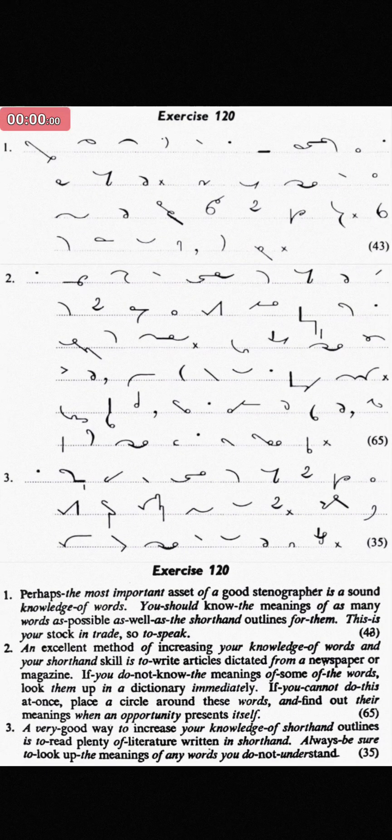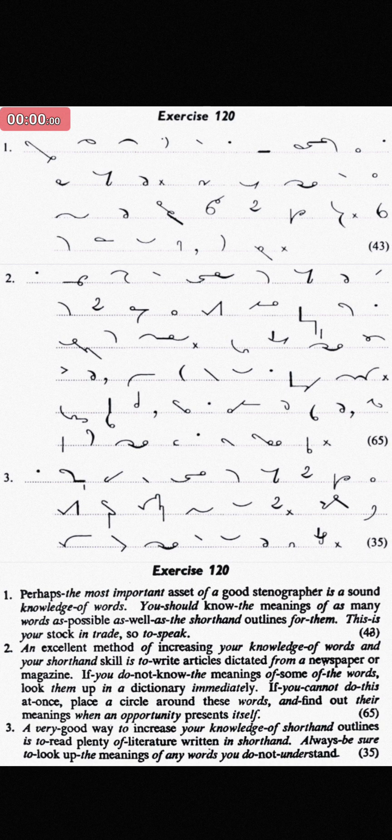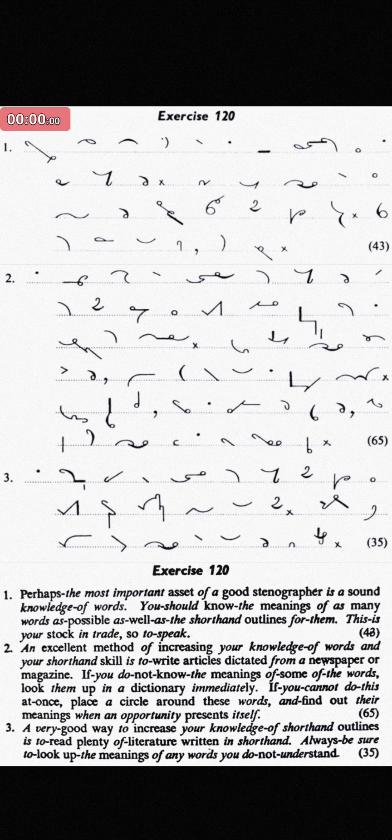Next is Exercise 120 at the speed of 90 words per minute. Perhaps the most important asset of a good stenographer is a sound knowledge of words. You should know the meaning of as many words as possible as well as the shortened outlines for them. This is your stock in trade, so to speak.